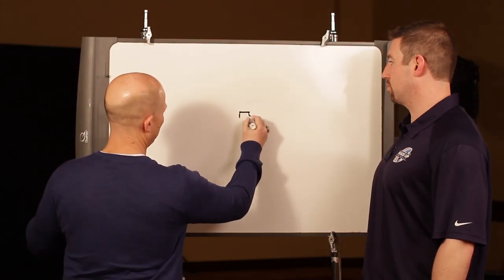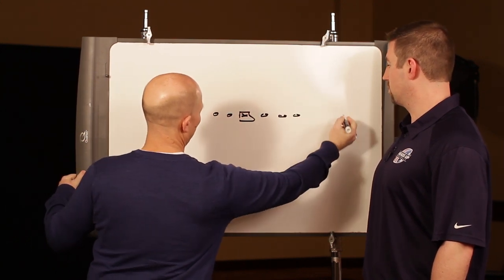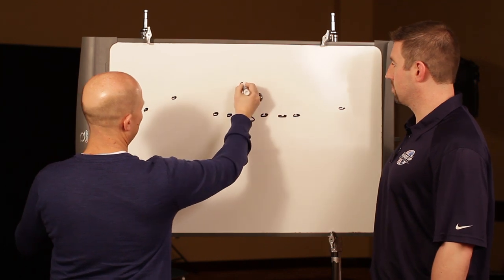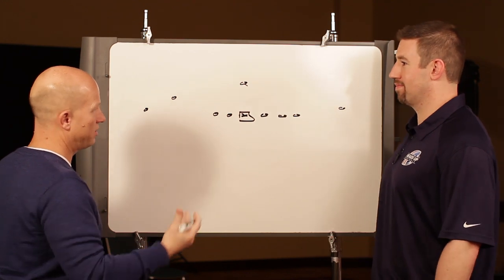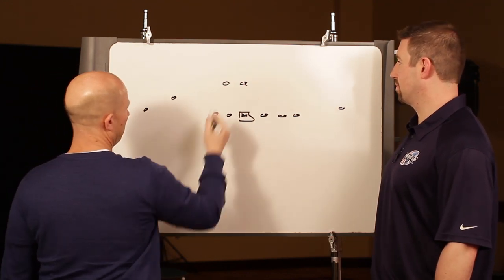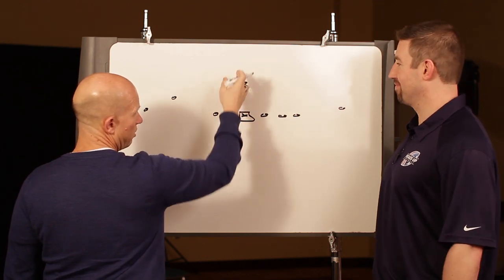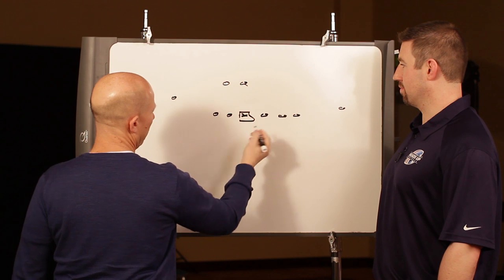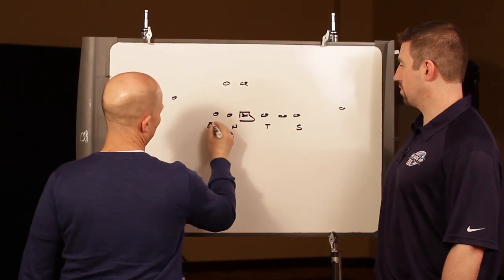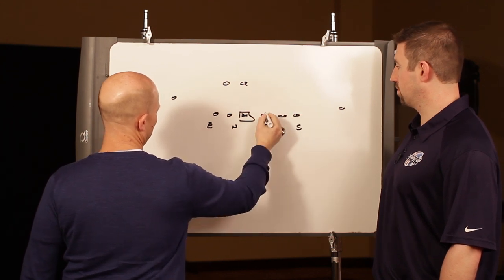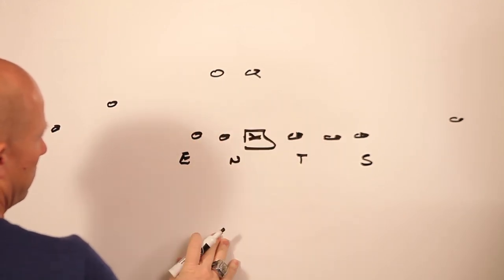Probably one of the first things we're going to determine against the zone read team is where are we going to get the back. If we can determine where the back is, that helps us a lot. We'll go an 11 personnel look, set the back here. Some teams are still using the offset back, some are going to the pistol. That'll determine a little bit of how we attack, but our base look in our 4-2 front is to set the strength to the tight end, be head up, outside shade. We will move this guy depending upon where the zone is hitting.